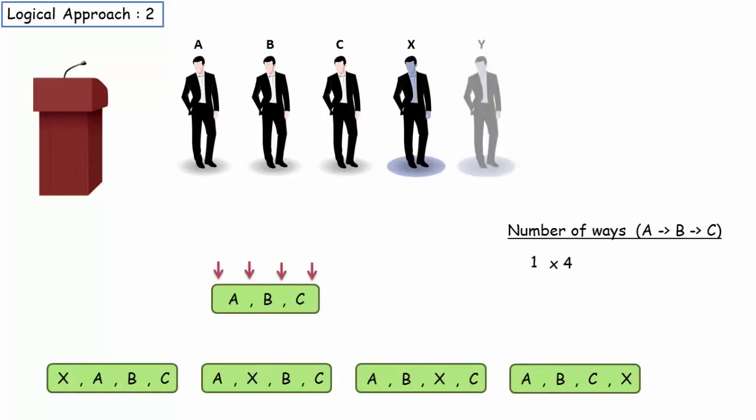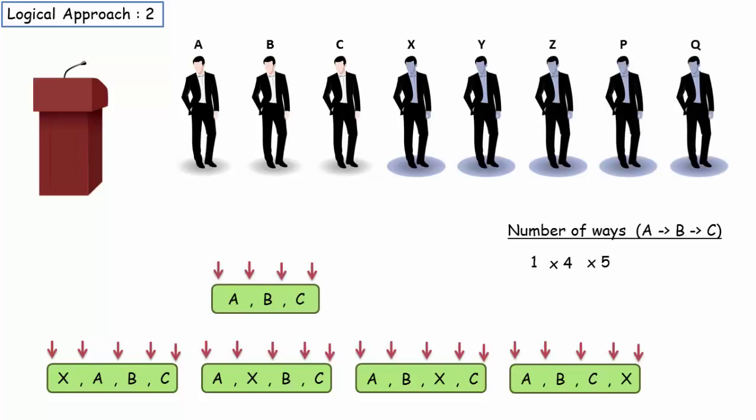Now, suppose the 5th person Y joins. He can be placed in 5 ways in each of these 4 arrangements. So, the total number of ways has now become 1 times 4 times 5. The same way when 6th, 7th and 8th person joins, the total number of ways will become 1 times 4 times 5 times 6 times 7 times 8.